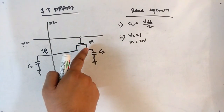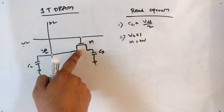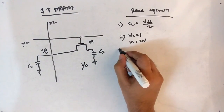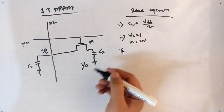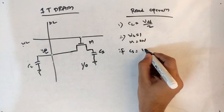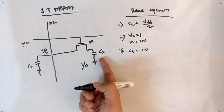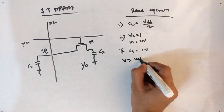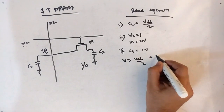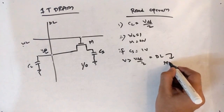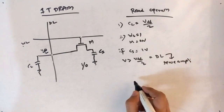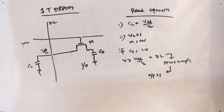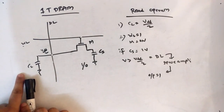If CS has a voltage of 1 and the transistor is ON, the voltage is shared onto the data line. Collectively, the voltage on the data line would be greater than VDD/2. This is then sent to the sense amplifier, which detects that the output is 1.